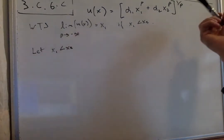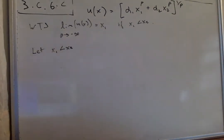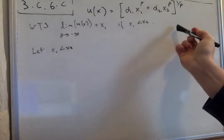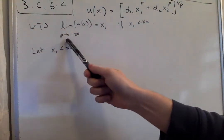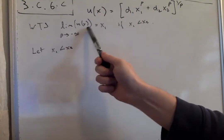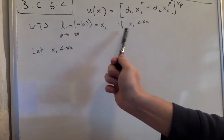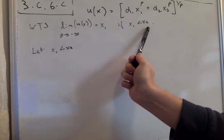Here we're trying to show that as ρ goes to negative infinity, we approach the min function. That means as ρ → -∞ of u(x), we want it to equal x₁, assuming x₁ is less than x₂.